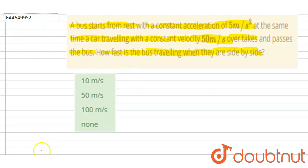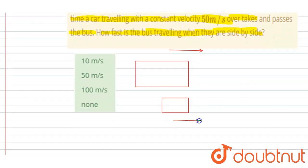So they start from the same point. Let's say this is the bus and this is the car. The acceleration of the bus is 5 meters per second squared. The velocity of the car is 50 meters per second. So I will write: this is the bus, it is having initial velocity zero and acceleration equals 5 meters per second squared.